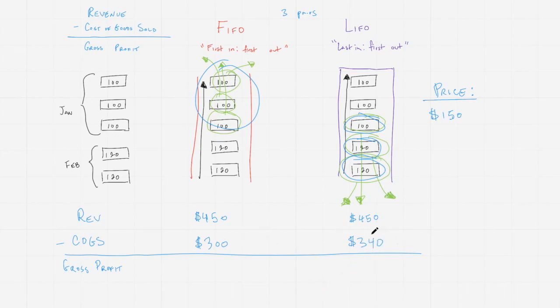You notice that this is different from our $300 cost of goods sold under the FIFO method, and this is going to have an effect on the gross profit. In the FIFO method, we've got $450 minus $300 gives us $150 in gross profit. Under LIFO, we've got $450 minus $340 gives us $110 in gross profit. You see how the difference can actually have a substantial impact on what we're reporting to our owners, investors, or shareholders on the income statement.